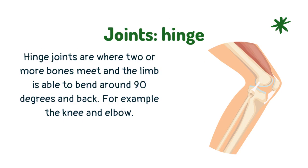Hinge joints are where two or more bones meet and the limb is able to bend around 90 degrees and back. For example, the knee and elbow.